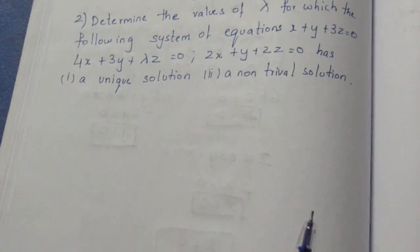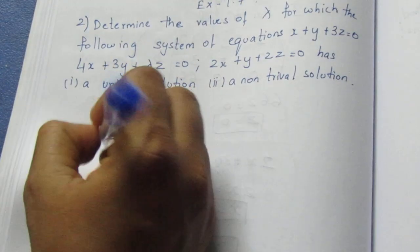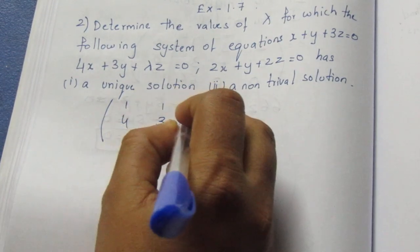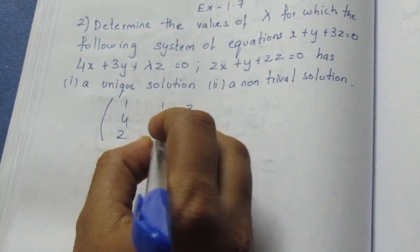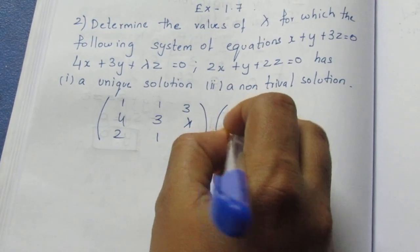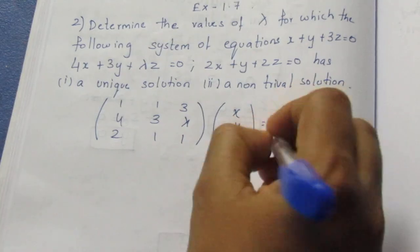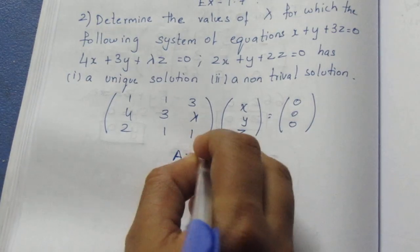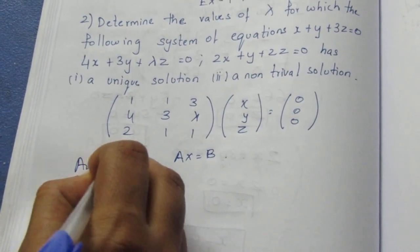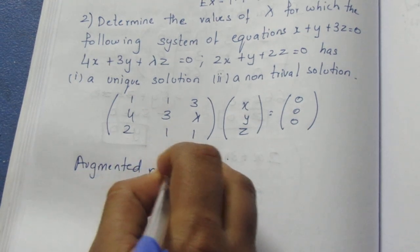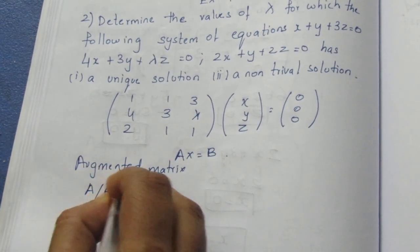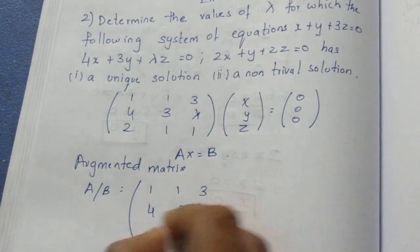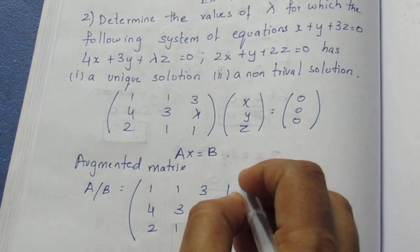What are we going to do? We are going to set up a coefficient matrix. The coefficient matrix is: 1, 1, 3; 4, 3, lambda; 2, 1, 1 — multiplied by the column vector x, y, z equals 0. Using the formula AX = B, we now write the augmented matrix A slash B: 1, 1, 3; 4, 3, lambda; 2, 1, 1 slash 0.